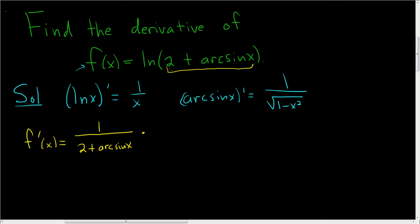So the derivative of 2 is 0, and then we have the derivative of arc sine. So that's 1 over square root 1 minus x squared. And that's actually the answer. That's it. I guess we could just leave it just like that.